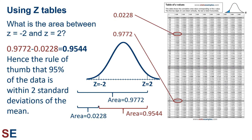Let's look at another example. What is the area between the z scores of negative 2 and positive 2? We go to the table and find the areas corresponding to z = 2.00 and z = negative 2.00. Those values are 0.9772 and 0.0228. 0.9772 minus 0.0228 equals 0.9544. This leads to the rule of thumb that 95% of the data in a normal distribution is within two standard deviations of the mean.